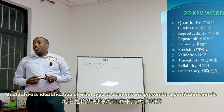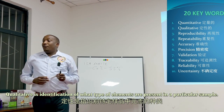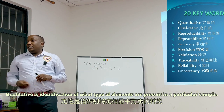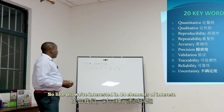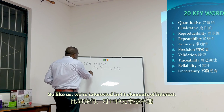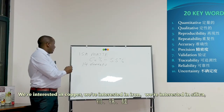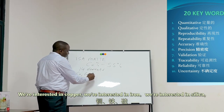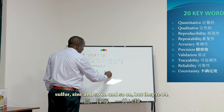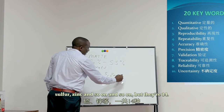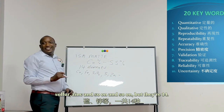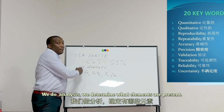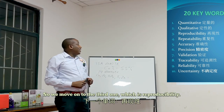For us, we're interested in 14 elements of interest — copper, iron, silica, sulfur, zinc, and so on. We do qualitative analysis to determine what elements are present.